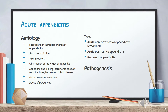Types of acute appendicitis: Acute non-obstructive appendicitis, also called catarrhal appendicitis, involves inflammation of the mucous membrane due to an infective causative organism, leading to increased secretion from the epithelium and ultimately causing appendicitis. Acute obstructive appendicitis occurs when lumen obstruction due to any of the above-mentioned causes leads to appendicitis. Recurrent appendicitis results from repeated attacks of non-obstructive appendicitis leading to fibrosis and adhesions.